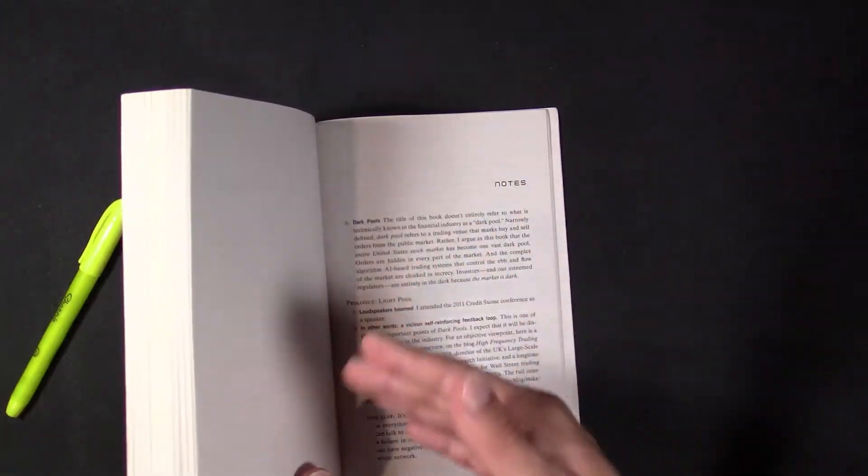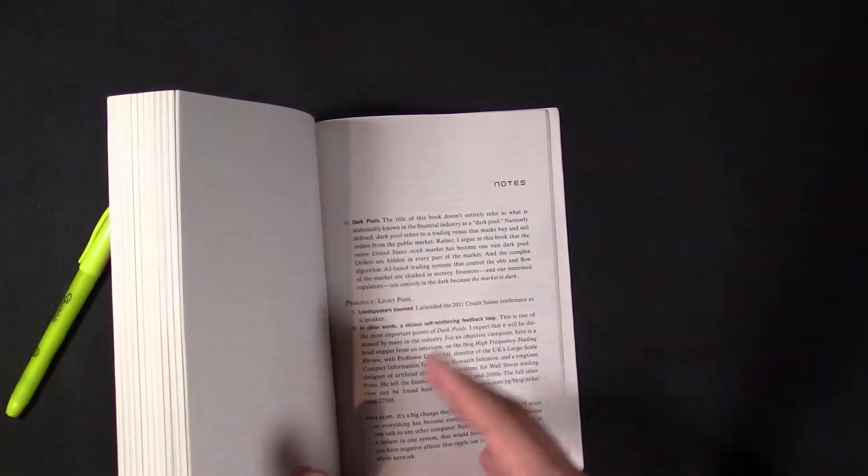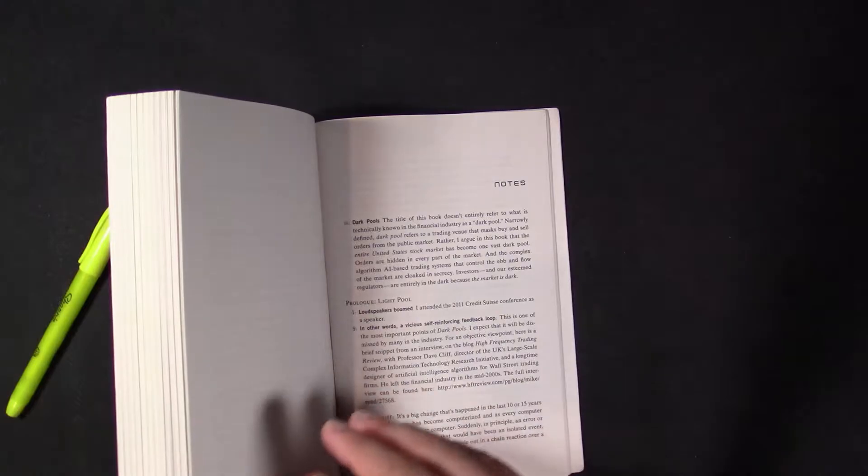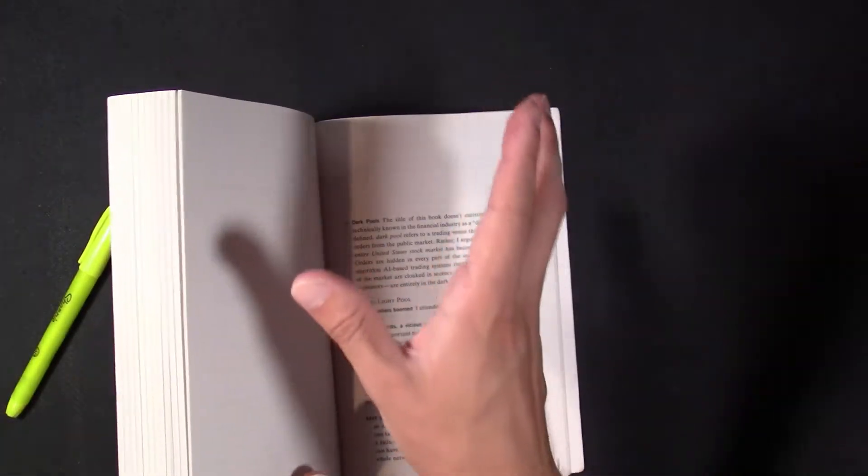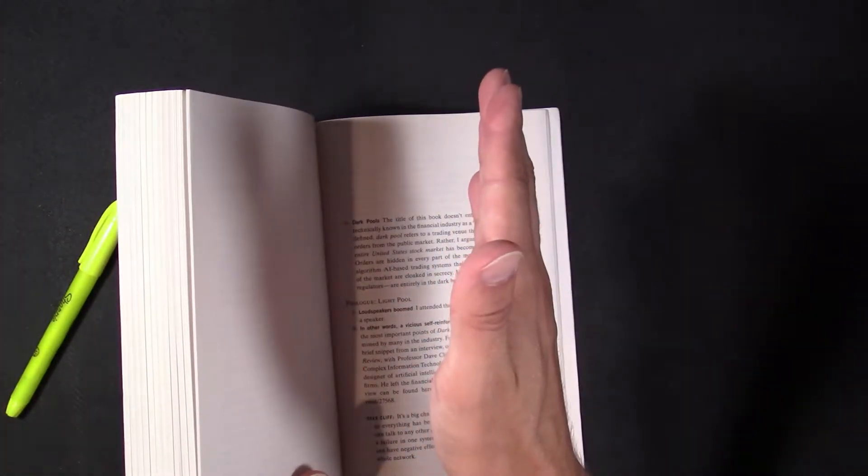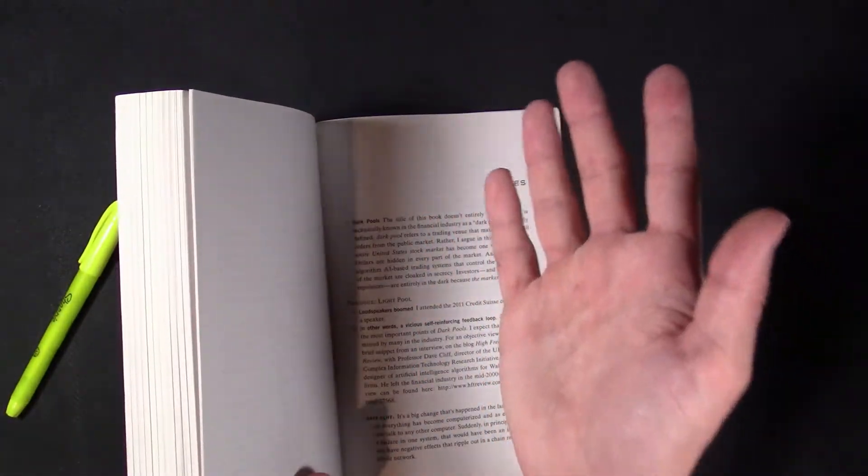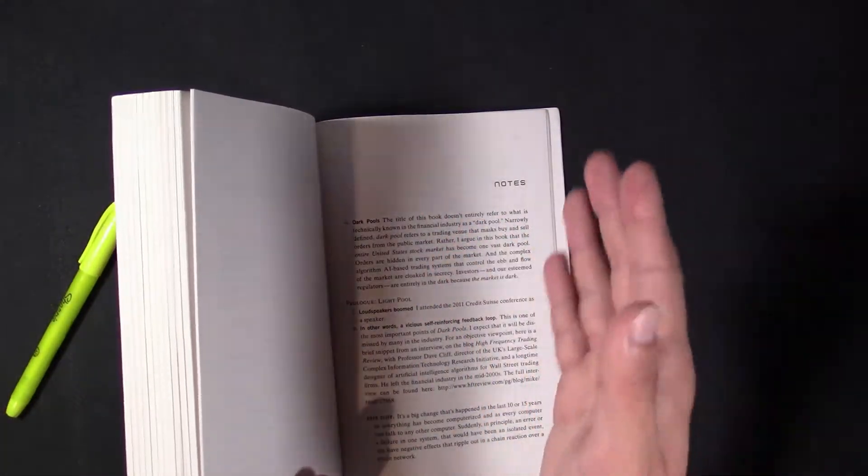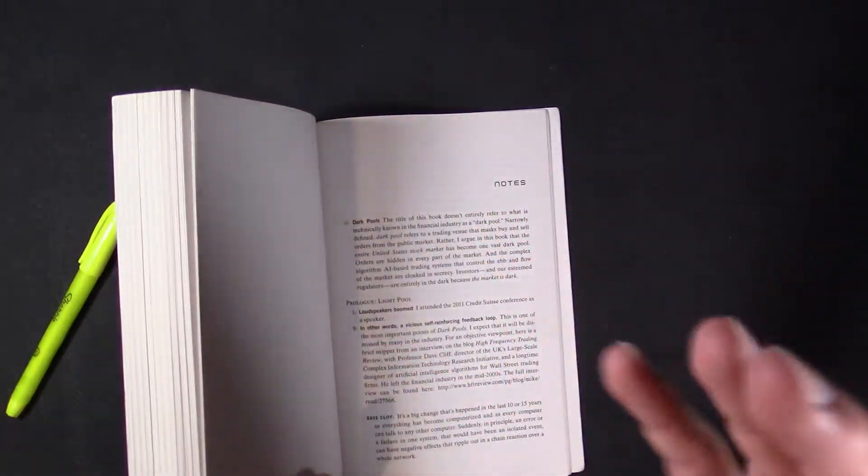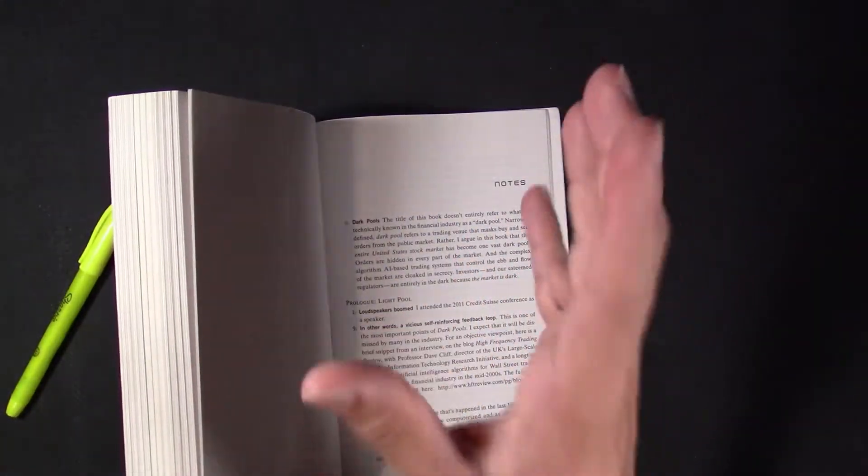So basically, these institutions and stuff, what they can do is they can send order flow into some literally darkness. Like, they want 10 shares of Apple, or they want like a million shares of Apple at like, let's say, 100 bucks, or make it easy.